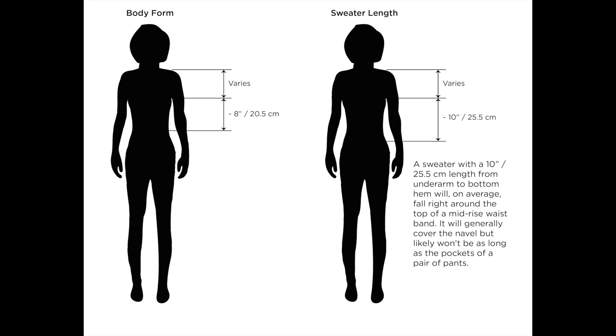The next length increment is a garment with a length of about 10 inches or 25 and a half centimeters from the underarm to the bottom hem. This isn't considered cropped necessarily, but it still falls a little short of being full length, so I'd call it a semi-crop. This sweater will probably fall right around the high hip or the top of a pair of mid-rise jeans — definitely below your navel but above the pockets. Just like the full crop version, ease will have a pretty big impact on where this sits. Less ease means more potential for the garment to ride up; more ease will allow it to hang more drapey and sit right at the top of your pants.